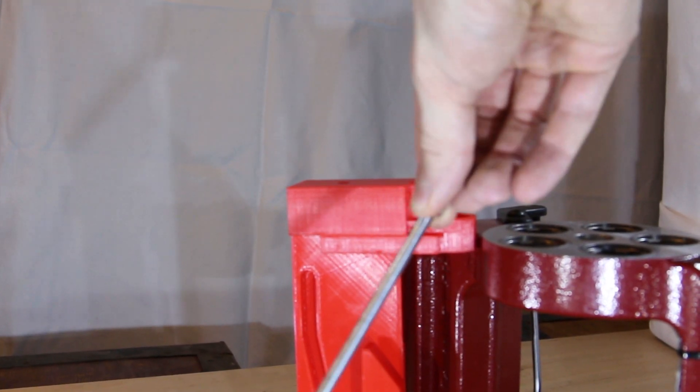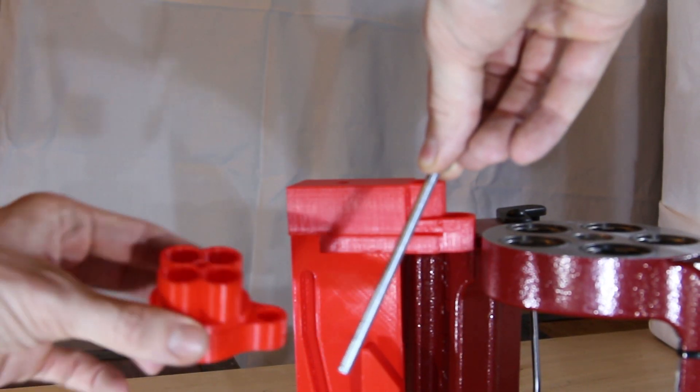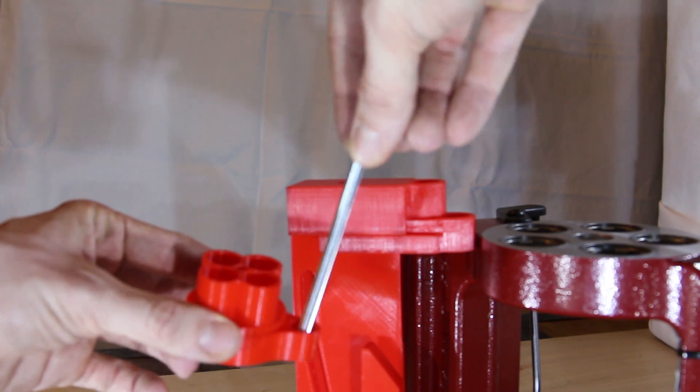The long screw is inserted through the hole of the tube holder and fixated with a nut. A second nut will be required shortly.